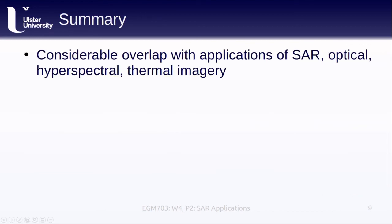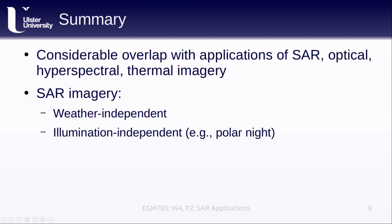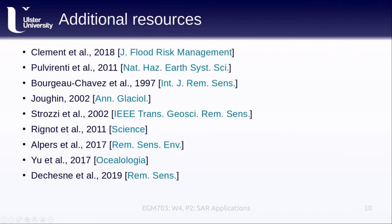As we've seen in this lesson, there are a number of ways that applications of SAR, optical, hyperspectral, and thermal images overlap, and we can often use these different techniques in complementary ways. In general, SAR images are weather independent — we can make observations despite heavy cloud cover, or even at night when we have no external source of illumination. Interpreting SAR images can be quite challenging, but we can still use a lot of the techniques we've already studied to help us make sense of what we're seeing. Links to the different articles referenced are available in the slide notes, and PDF versions are in the Zotero library, along with a few additional papers. If you have any questions, please don't hesitate to email me or post in the discussion forum on Blackboard.